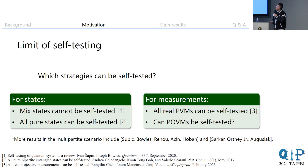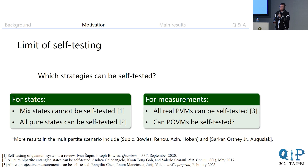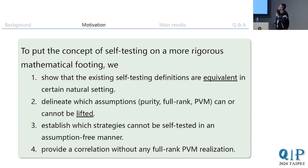By the limit of self-testing, we mean understanding what strategies can or cannot be self-tested. For states this question is fairly complete: all mixed states cannot be self-tested, and we already know how to self-test any bipartite pure state. But for measurements the question is incomplete — we know all real projective measurements can be self-tested, but we still don't know the limit: can we or cannot we self-test non-projective measurements like real POVMs?